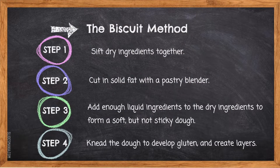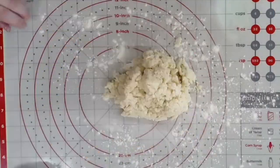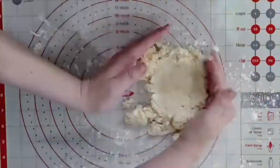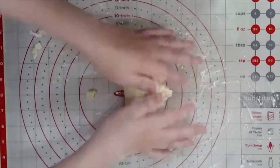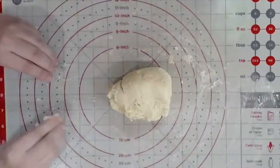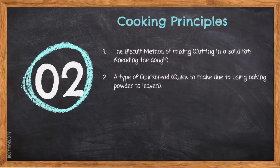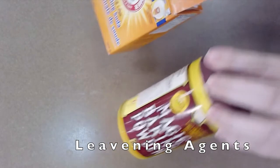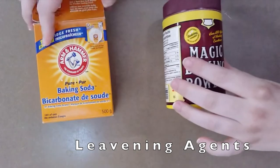Step 4: Knead the dough to develop gluten and create layers. This is a type of quick bread, quick to make due to using baking powder to leaven. Leavening agents are ingredients that cause our products to rise.